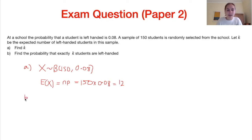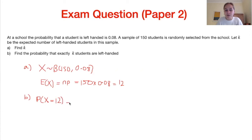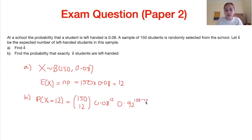Part b: find the probability that exactly k students are left-handed. We want P(X = 12) using the binomial formula with n = 150, x = 12, p = 0.08. This gives: P(X = 12) = 150C12 × 0.08^12 × 0.92^138. Working this out on a calculator gives 0.119, remembering that in all exam papers we round to three significant figures.